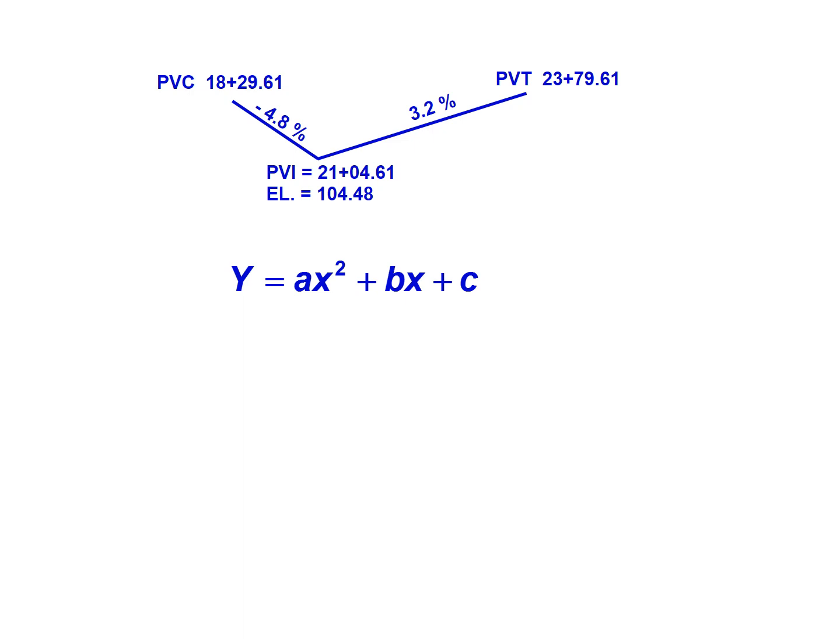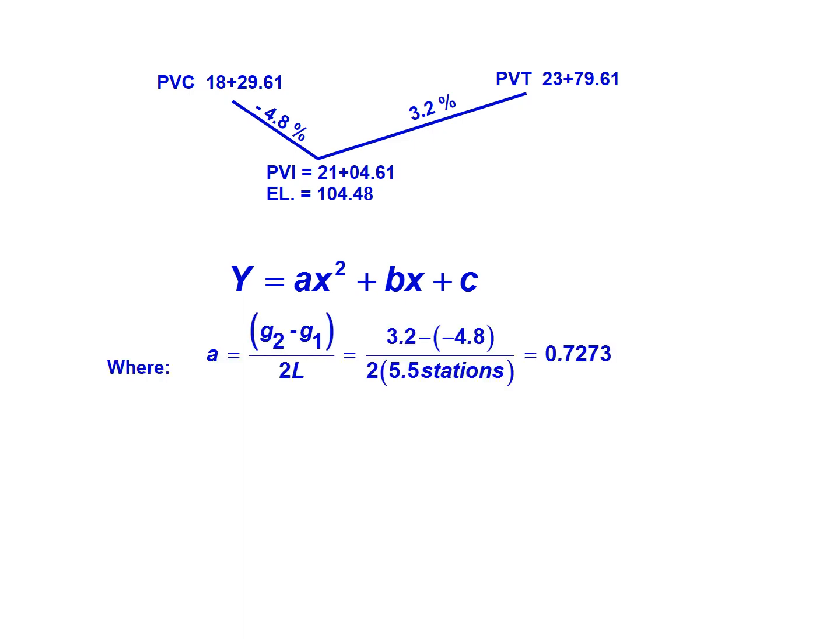We start with y equals ax squared plus bx plus c. For 'a', that term is (g2 minus g1) divided by 2 times L. So g2 is 3.2, minus g1 which is negative 4.8 — making sure we keep that negative sign — divided by 2 times the length. The length isn't explicitly given, but subtracting the PVC station from the PVT station gives 550 feet, equivalent to 5.5 stations, which is what we input for parameter 'a'. Working out that calculation, a equals 0.7273.